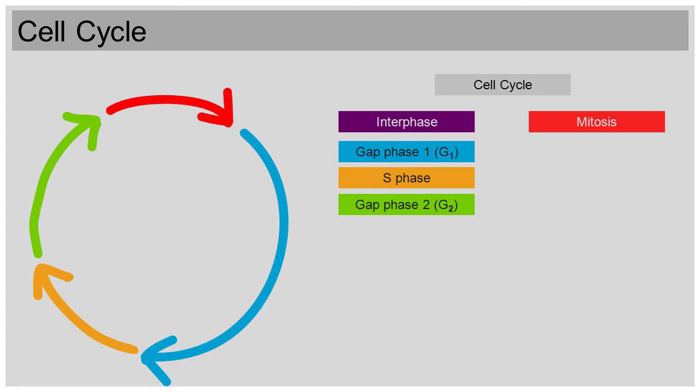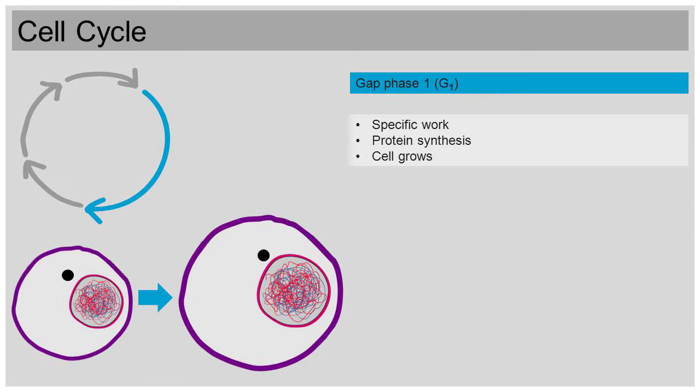So what exactly happens in these phases? During G1 phase, the cell carries out its specific work, which is different for each cell type. For example, muscle cells have different work to do than brain cells. Furthermore, the cell synthesizes proteins. The cell grows in this stage as well. You said mitosis was about the cell's nucleus. What does the nucleus look like before mitosis during G1 phase?